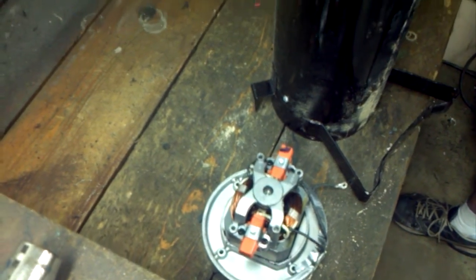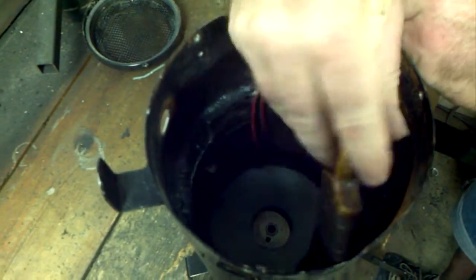First, you lube up the gasket on the inside. Baby oil, again, or WD-40, or some diesel fuel.